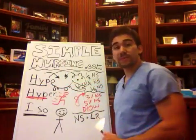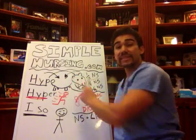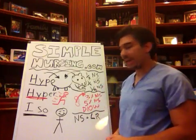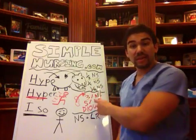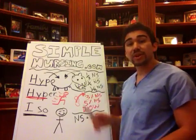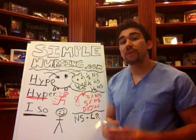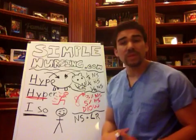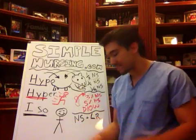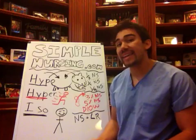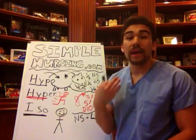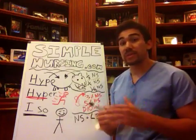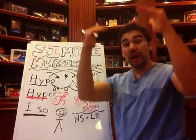So we know hypotonic fluids — all the fluid is rushing into the cell. These consist of your half NS, your one-fourth NS, and your one-third NS. Again, that's 0.45% NS, your one-fourth NS which is 0.225% NS, and your 0.33% NS. These are your hypotonic solutions. Pretty much anything around those numbers — 0.33 and above in that range — is your hypotonic solution.